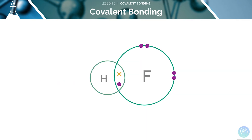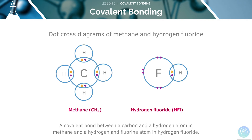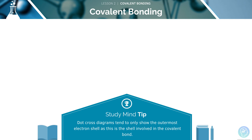In this diagram, there will be attraction between the shared electrons and the centre of the H and the centre of the F, where the positively charged nuclei will be. There are two electrons in each covalent bond, where each is represented by either a dot or a cross. Each atom in the covalent bond gives one electron to each covalent bond. The dot-cross diagrams will only show the outermost electron shell, as this is the shell involved in the covalent bond.